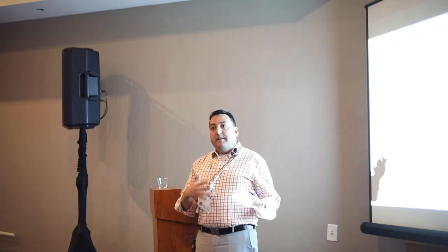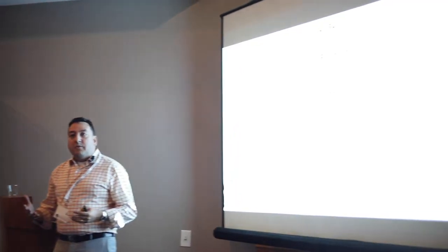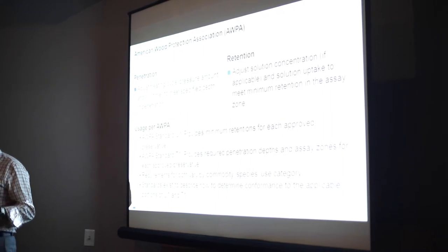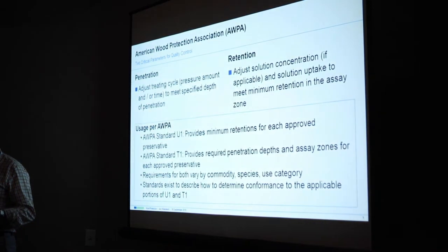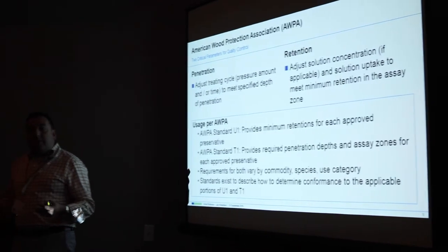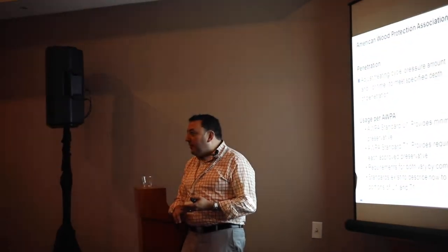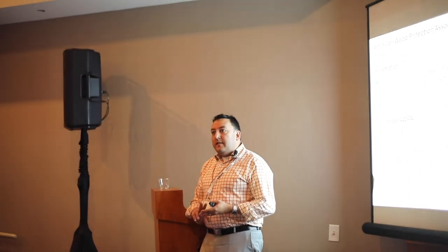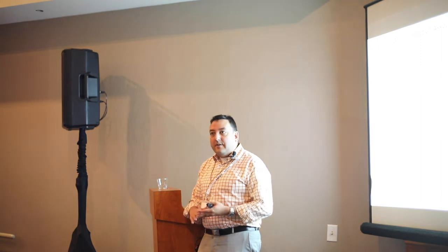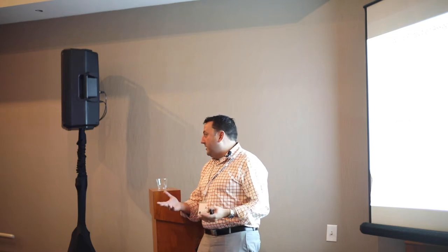The two important quality parameters in AWPA are penetration and retention. Penetration is the depth of ingress that the preservative system achieves into the treated piece of wood. That's under your control based on initial vacuum, pressure treatment, amount of pressure, time of pressure, and amount of final vacuum. Retention can also be adjusted by the treatment cycle and predominantly by making adjustments to the solution concentration, depending on your goals.